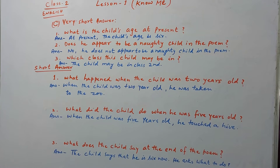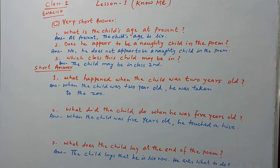Very short answer. Question number 1: What is the child's age at present? The answer is, at present, the child's age is 6.